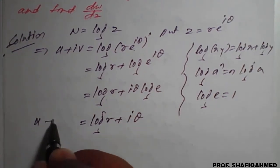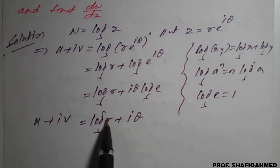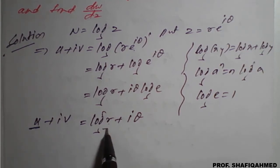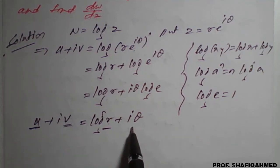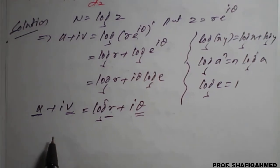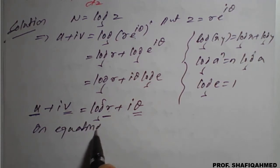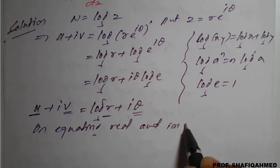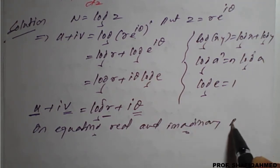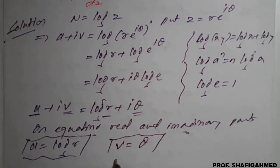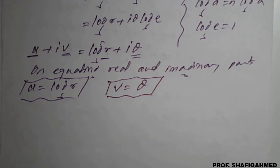So this is nothing but u plus iv. Log r is free from i but theta is with i. So log r is the real part and theta is the imaginary part. On equating real and imaginary parts: u equals log r and v equals theta. We have now identified the real and imaginary parts.